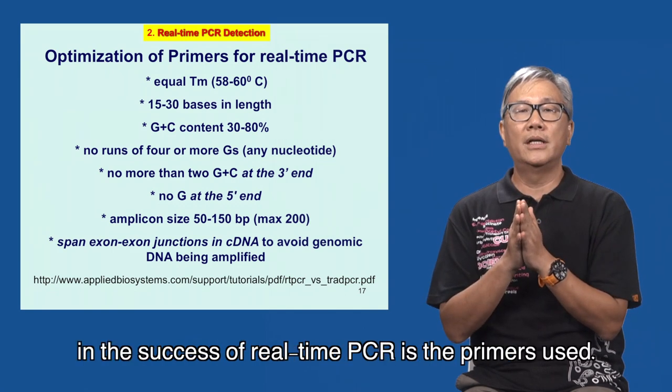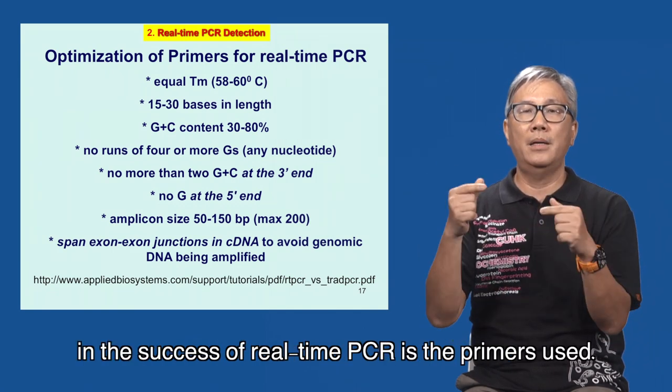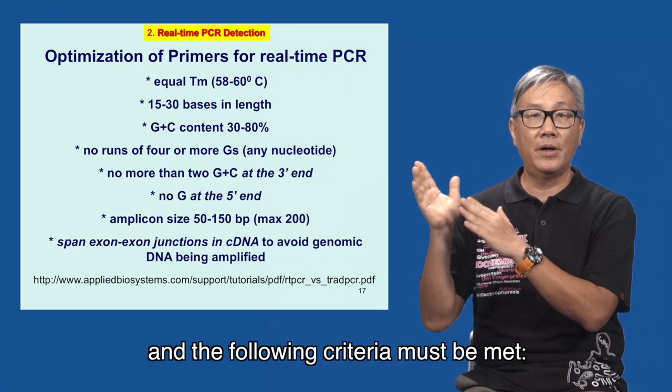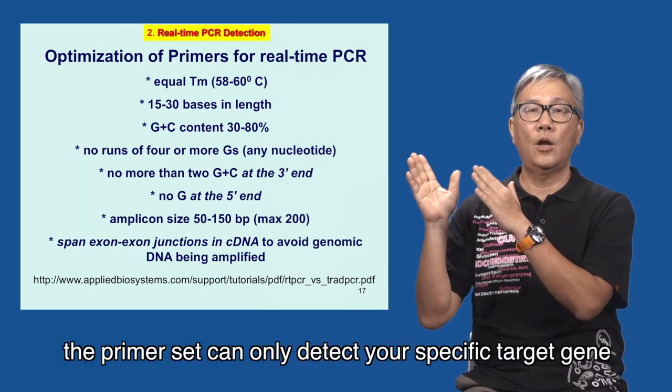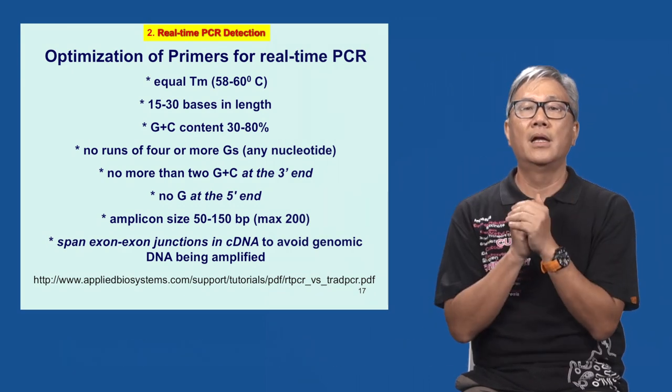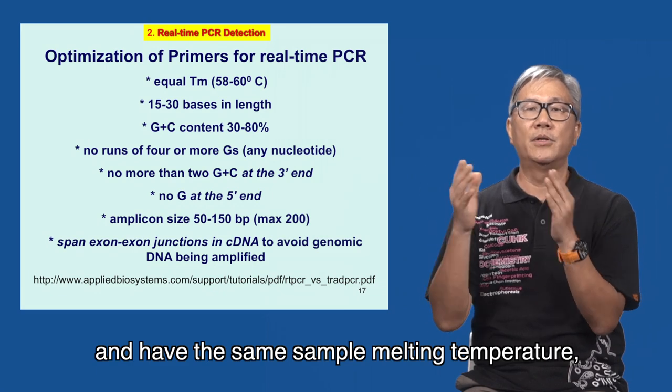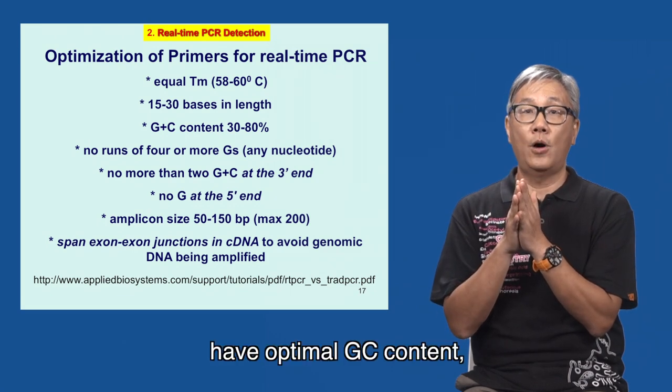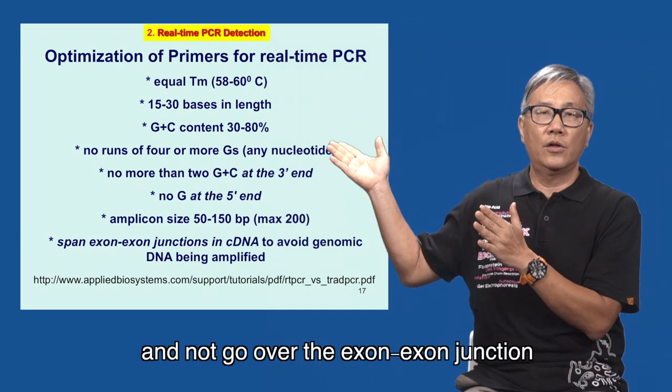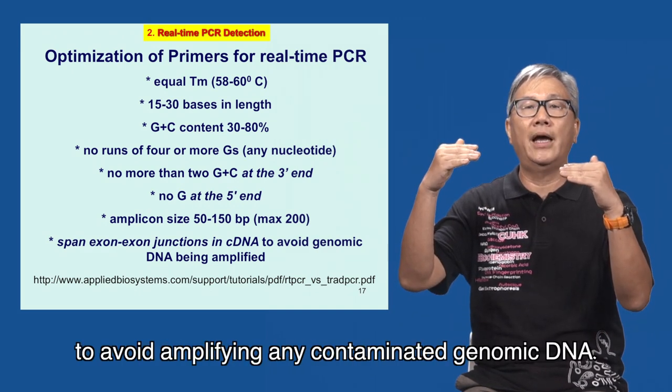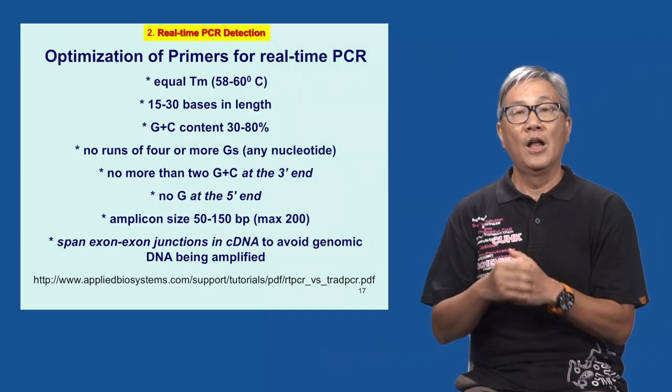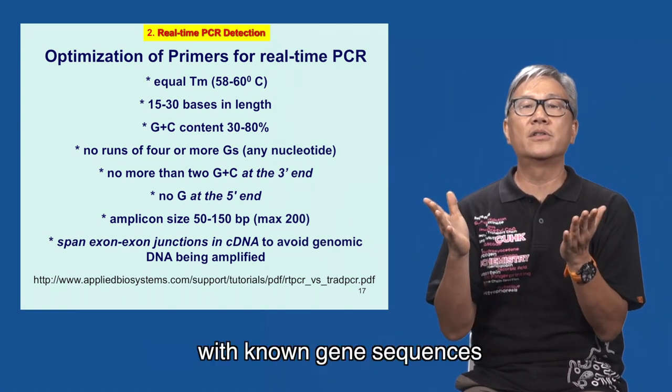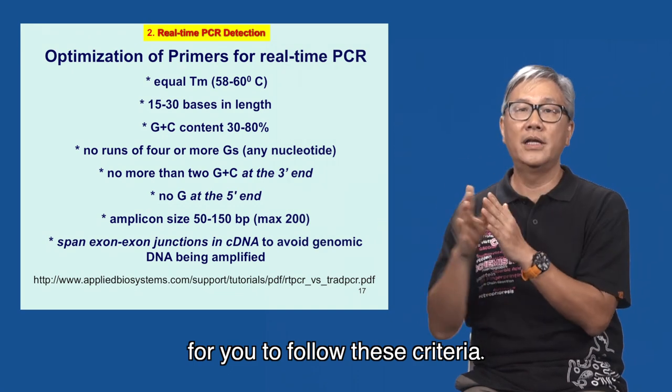The most important component in the success of real-time PCR is the primers used. The primers have to be optimized for real-time PCR and the following criteria must be met. The primer set can only detect your specific target gene and have the same melting temperature. And it must be between 15 to 30 base pairs long, have optimal GC content, and not go over the exon junction to avoid amplifying any contaminated genomic DNA. Of course, there are computer programs available online to design the primers with long gene sequences for you to follow all these criteria.